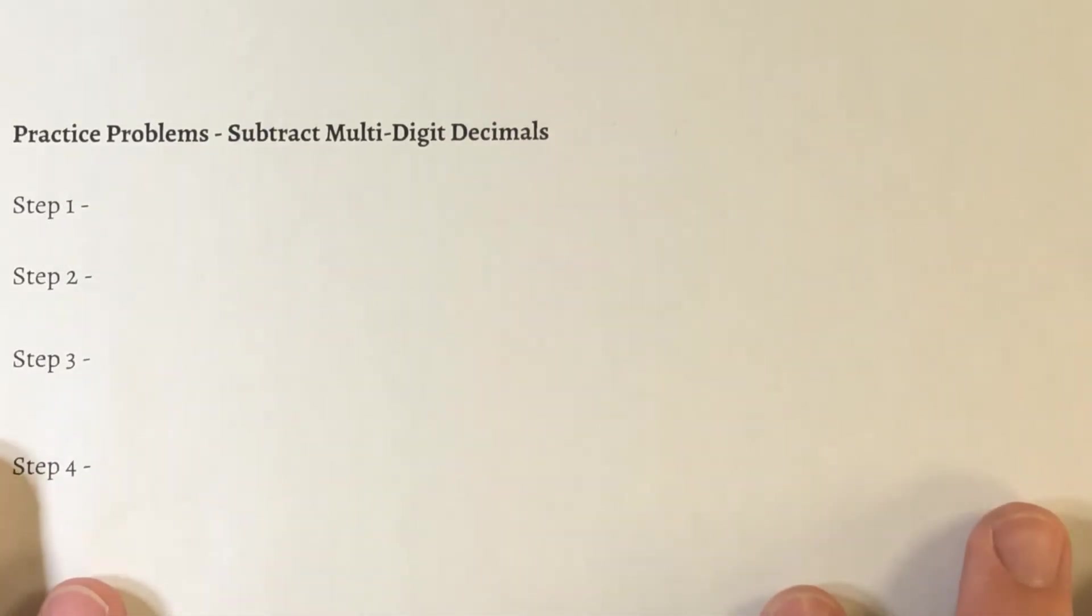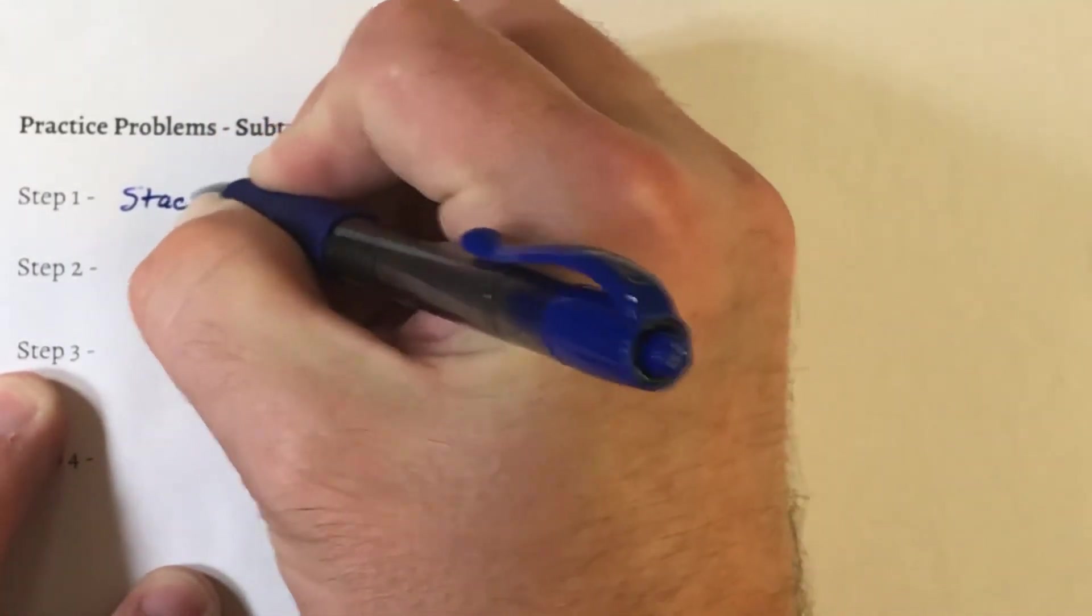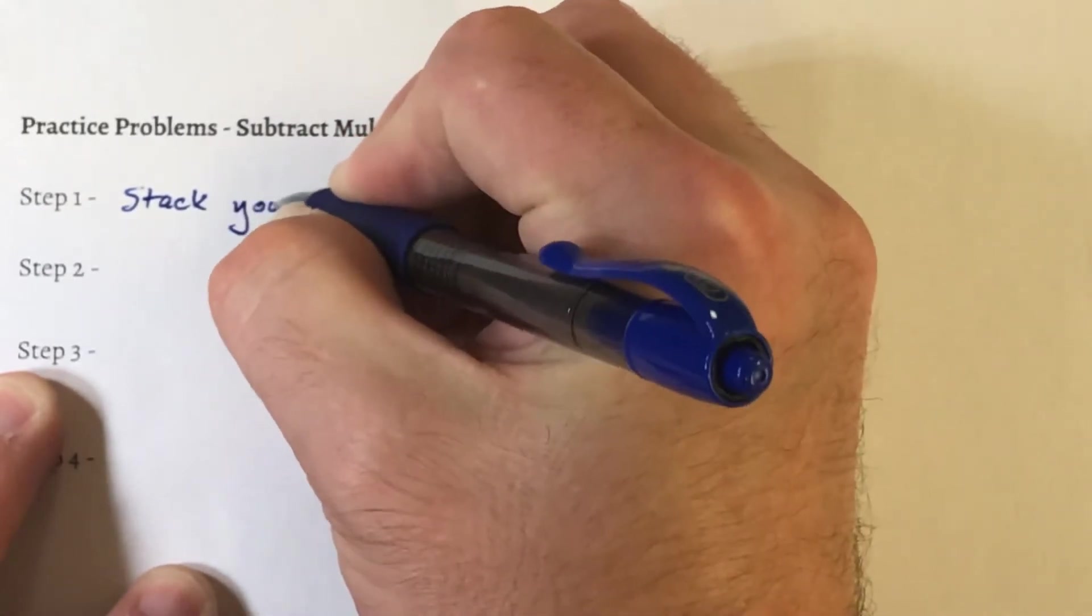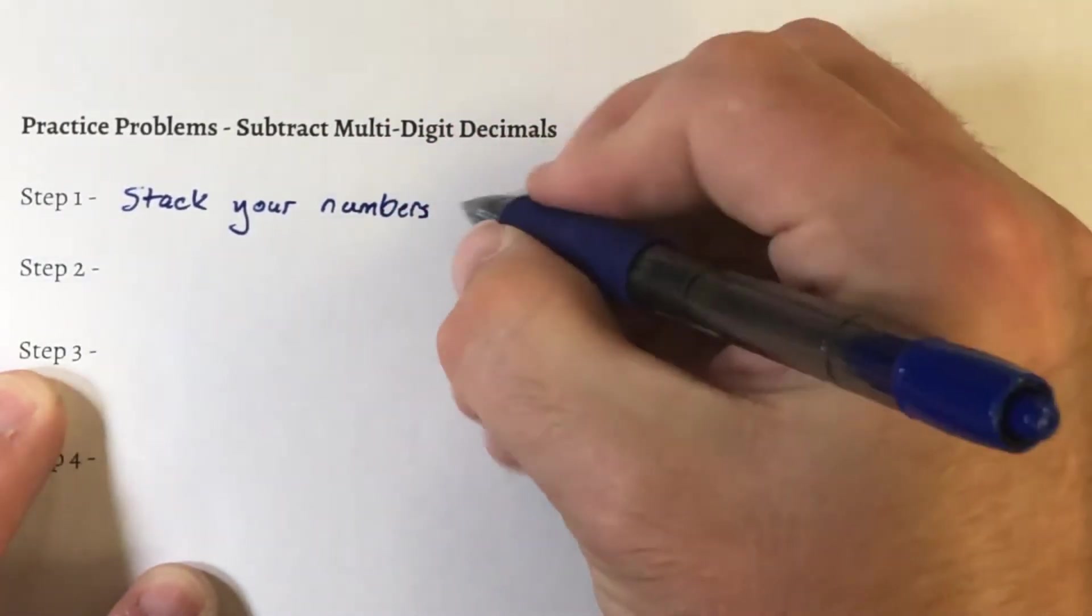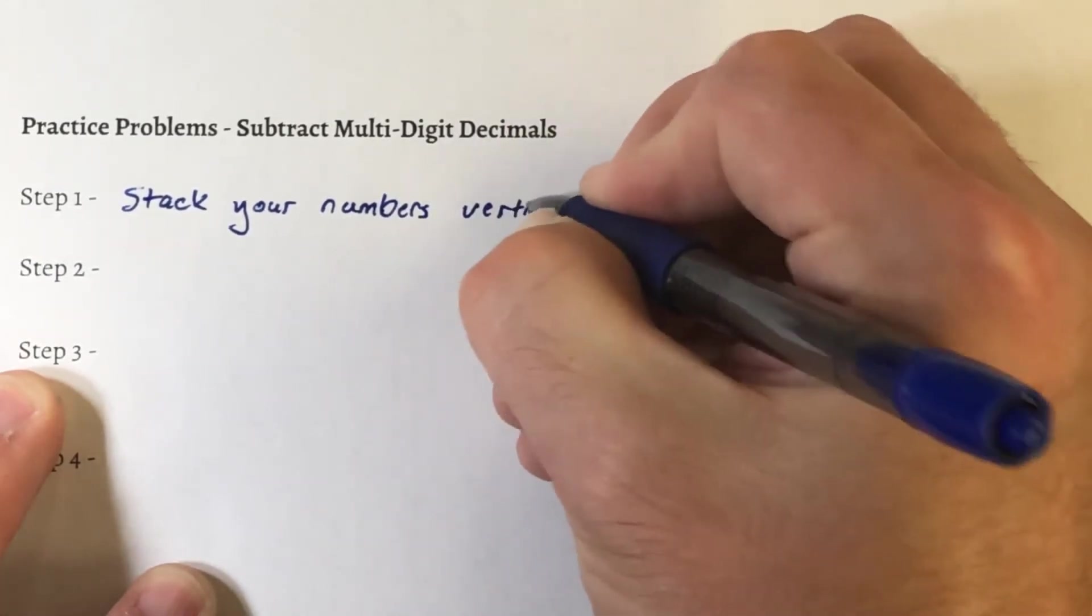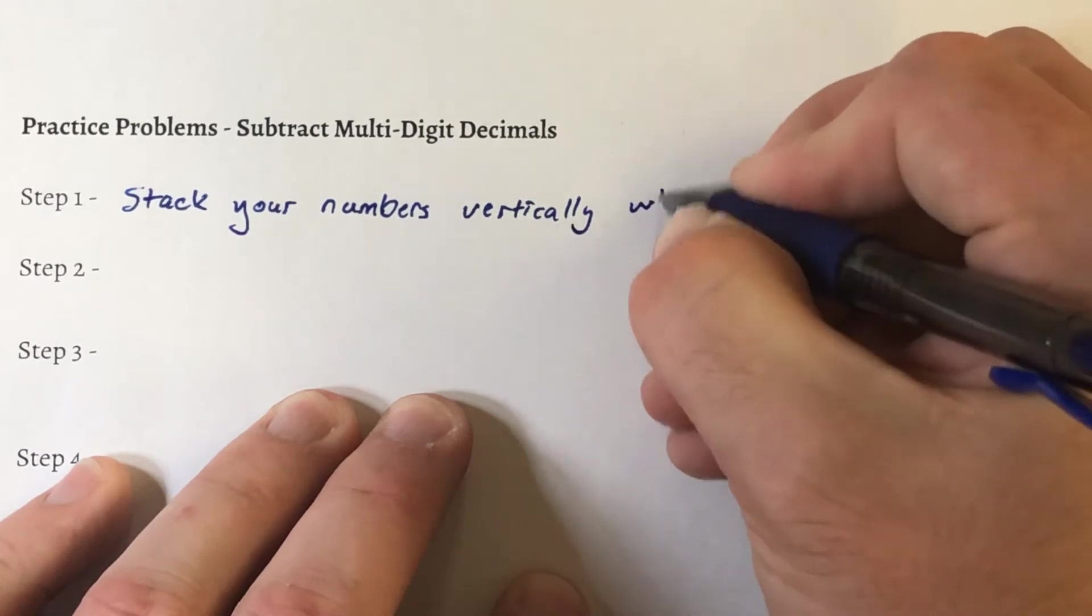Okay, subtraction with multi-digit numbers. The steps are essentially the same. Step 1 is stack your numbers vertically, in other words on top of each other, while lining up the decimal.